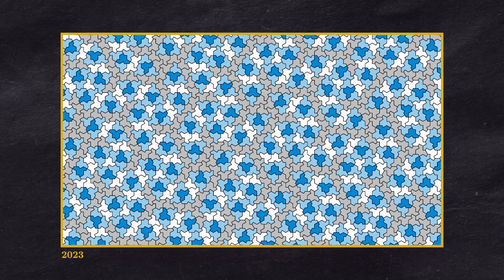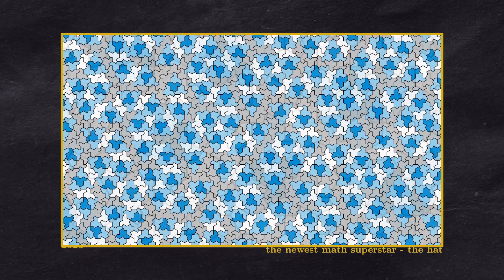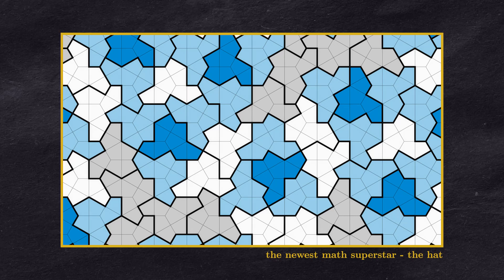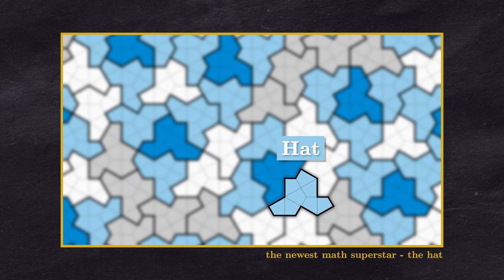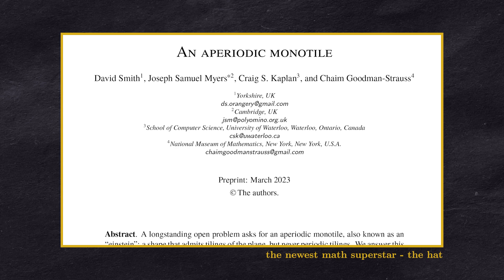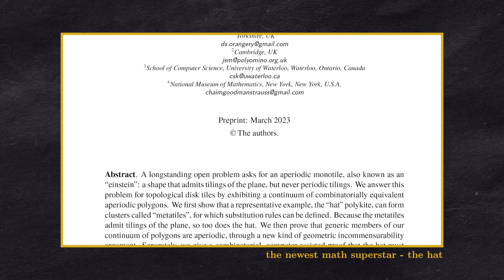2023 was full of mathematical joy and discovery. In March a newly found shape named hat solved a long-lasting problem of finding an aperiodic monotile, a so-called Einstein.